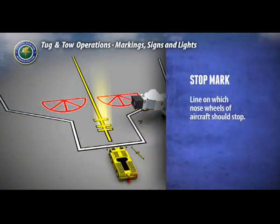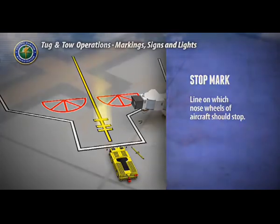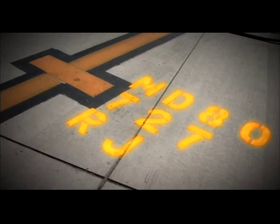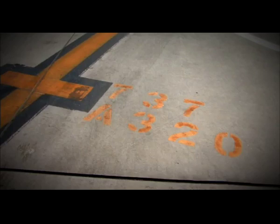The stop mark is the line on which the nose wheels should stop. The marshal will signal this to the pilot. This line may be along different areas of the lead-in line depending on the type of aircraft allowed at the gate. There may be multiple lines, and there may be aircraft-type indicators next to the appropriate line.